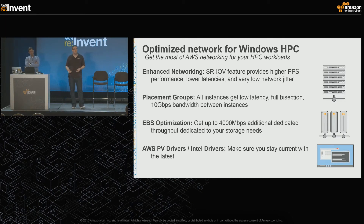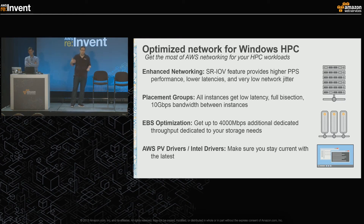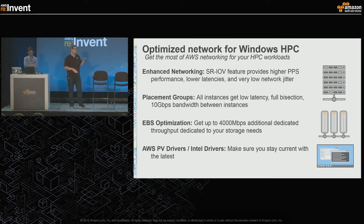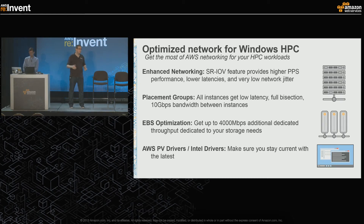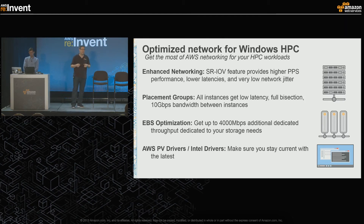EBS optimization: if you need to store lots of data, EBS-optimized is a great approach. An EBS volume is a network drive stored separately from the machine. Using EBS-optimized instances gives you basically two network cards that are completely isolated - you can have 10 Gbps to the outside world plus 4 Gbps dedicated to storage. So it's a great way to get more performance. Finally, keep to the latest drivers. If you're using Windows 2012 R2, the latest drivers are included by default. For older operating systems or machines brought from on-premises, make sure you have the latest drivers - we have lots of developers and Intel has lots of developers working on bringing more value with every generation.